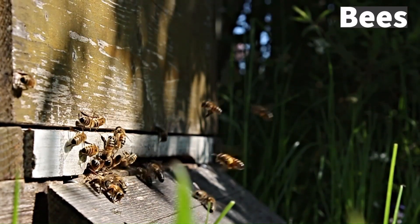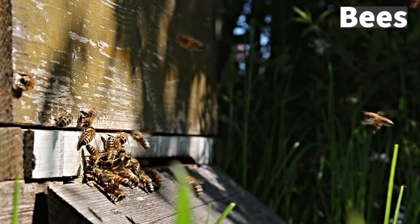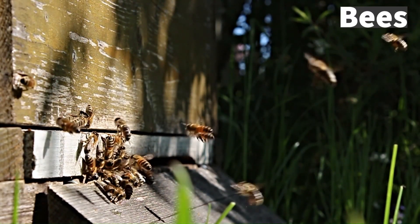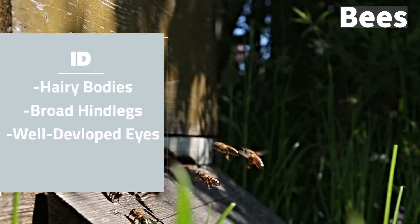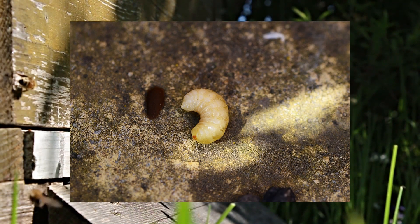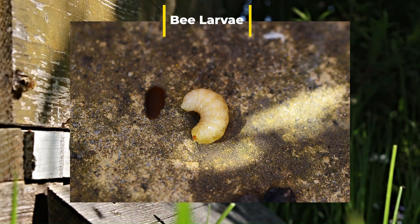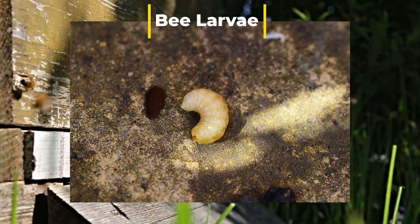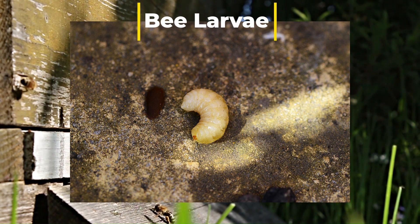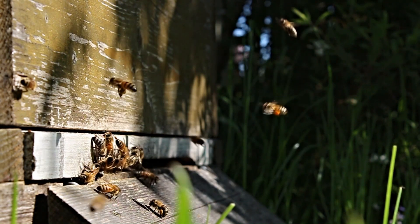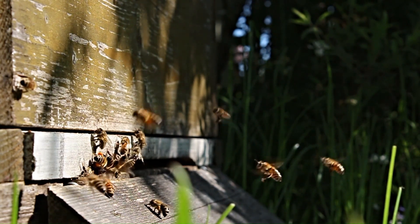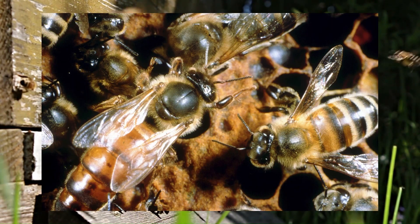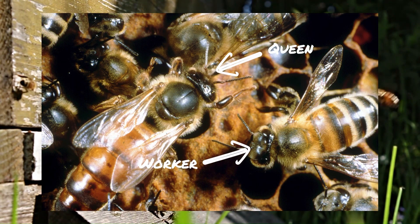Bees are the most economically important insects in the world, and they can be identified by their hairy bodies, broad hind legs for holding pollen, and well-developed eyes. The larvae of bees lack many features, just like wasp larvae, and just like wasps, bees are mostly solitary organisms, however there do exist some incredibly notable social species. Social bees have a highly developed social structure and movement-based communication systems.